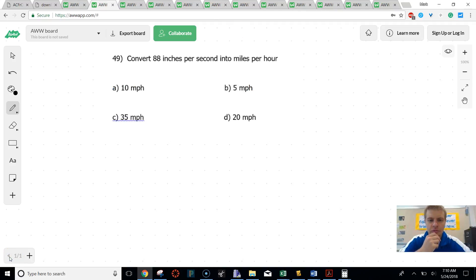So we have to convert inches per second into miles per hour. So this is where we're going to start our chain of things. So we have 88 inches over 1 second. Now, what I really want is I want inches to change to miles, and I want seconds to change to hours.